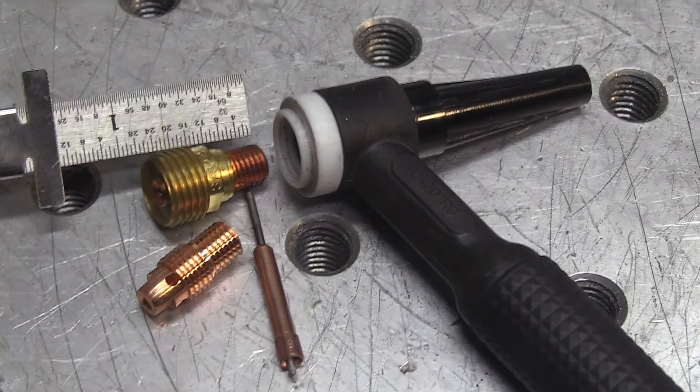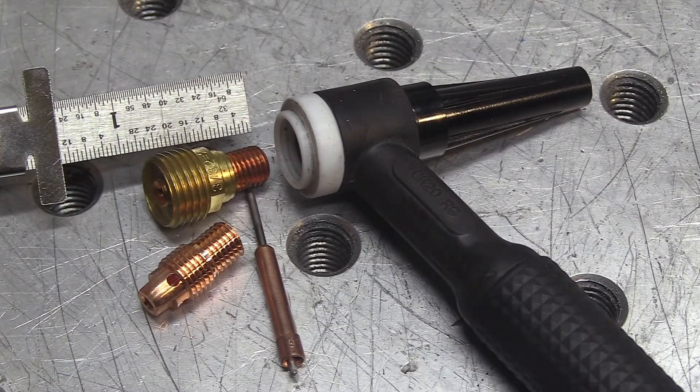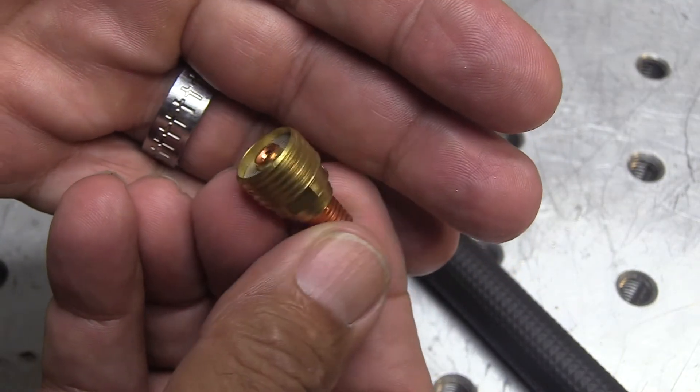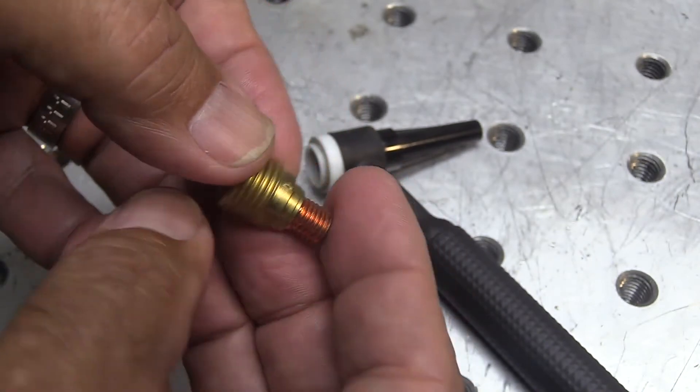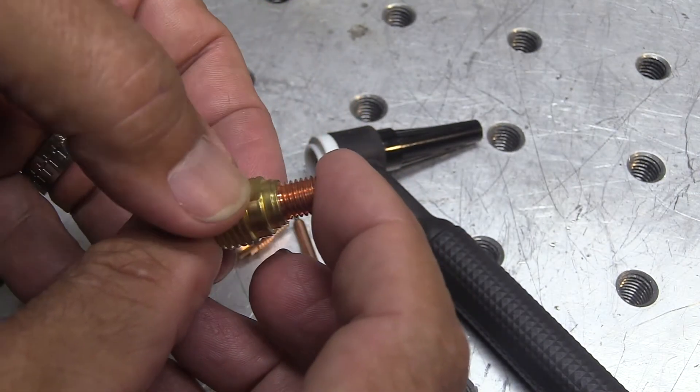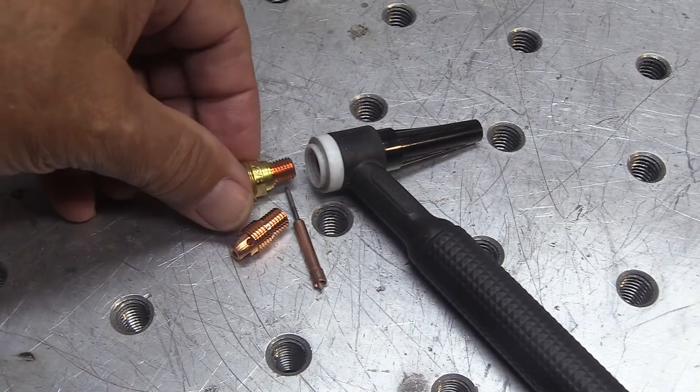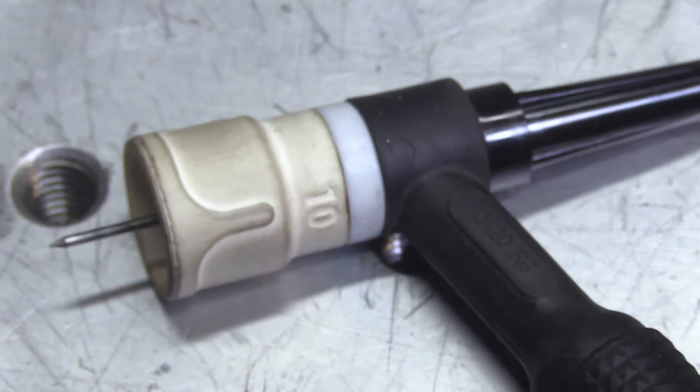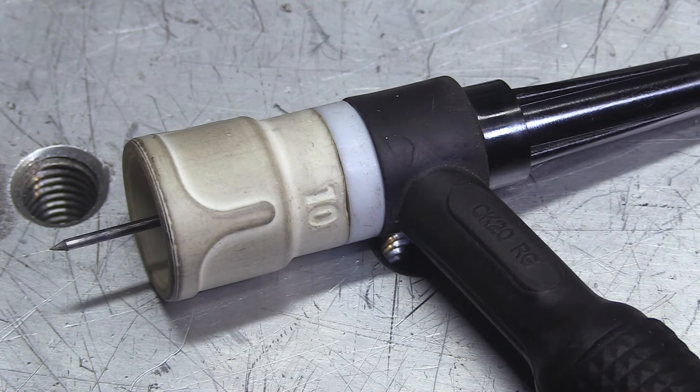If you have a number 9 or a 20 style torch that uses little small hardware like this that's only about 7/8 of an inch long this is a 45 v 44 part number all you need is the Jazzy 10 and you're good to go screws right on just like a regular gas lens cup gives you way better shielding though.